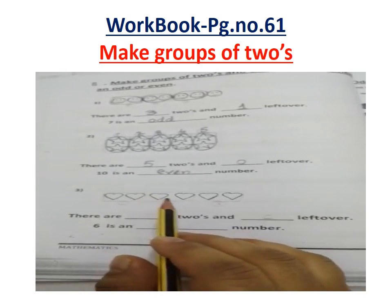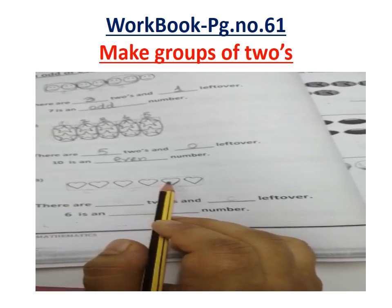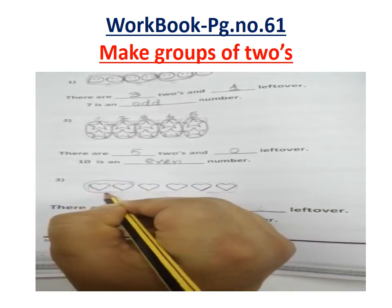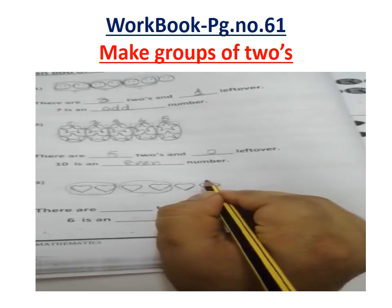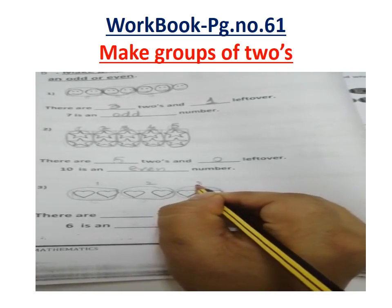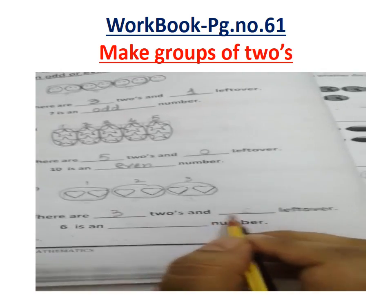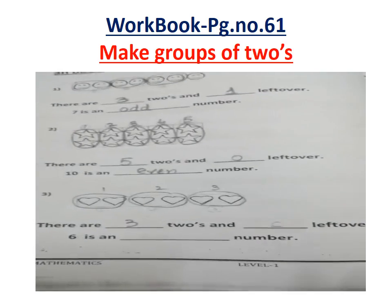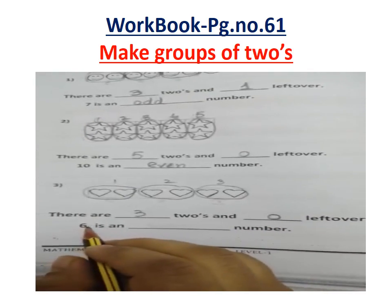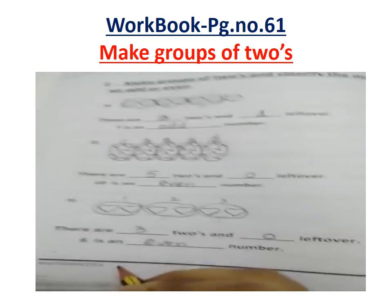Students, you can see small little hearts here. Count the number of hearts: 1, 2, 3, 4, 5, 6. Now start making groups of twos: group 1, group 2, group 3. There are 3 twos. Is anything left? No — 0 left over. That means 6 is an even number. Very good, students!